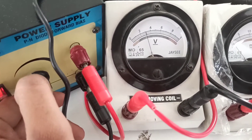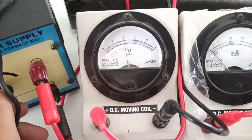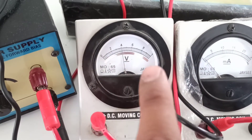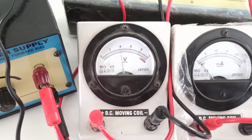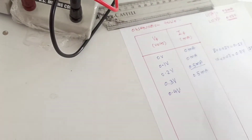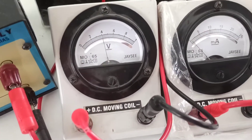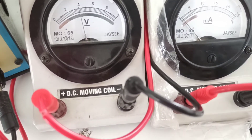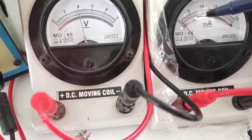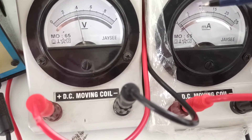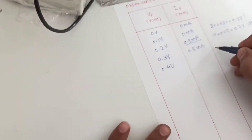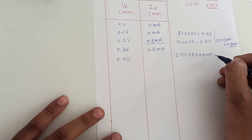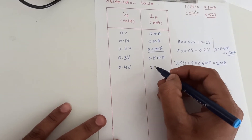Similarly, for 0.4 volt: 20 divisions into least count 0.02 gives 0.4 volt. For 0.4 volt, current is 2 divisions — 2 divisions into least count 0.5 mA gives 1 mA. So the reading from the ammeter is 1 mA.